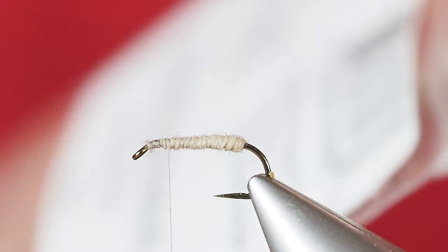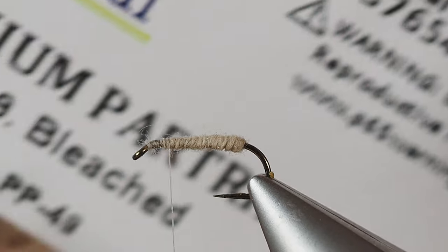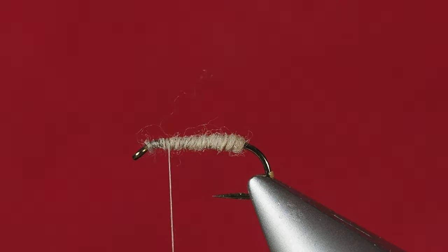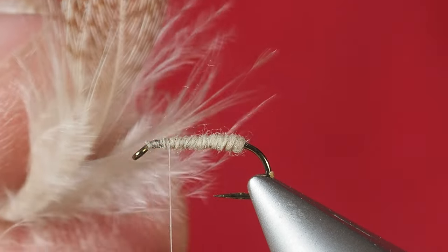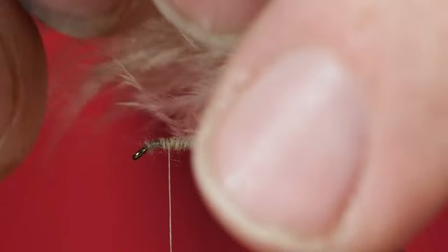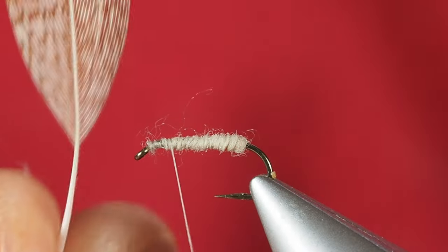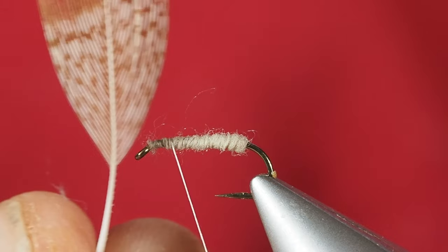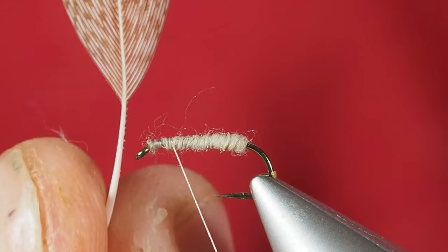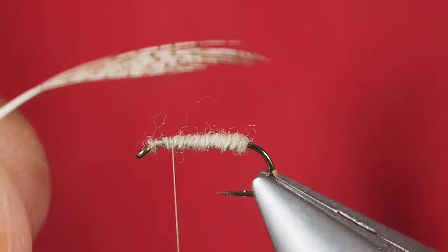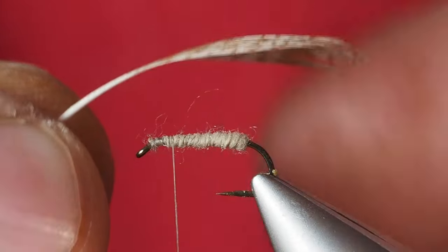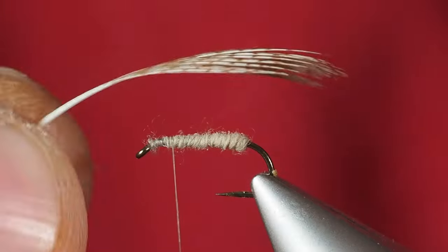I'm using a bleached partridge here from Nature Spirit, and the feather that I've chosen is kind of looking about like this. I'm going to prepare the feather. We'll strip off the fuzzies. Once we have the fuzzies stripped off, we'll be left with the feather looking about like this. We've got a nice clean stem on the feather and it's a fairly well-balanced feather as well in terms of the number of fibers we have on either side.